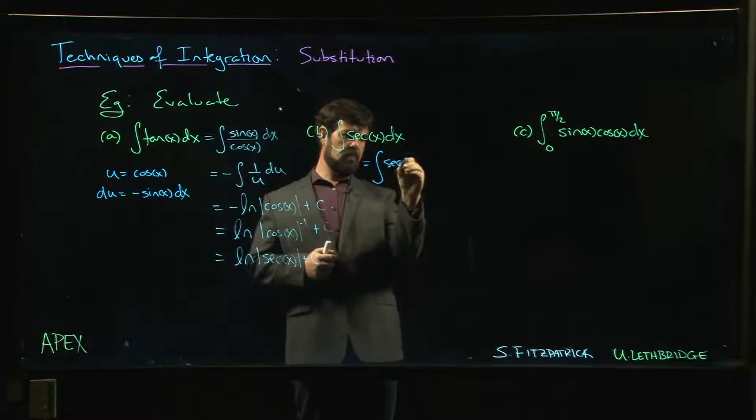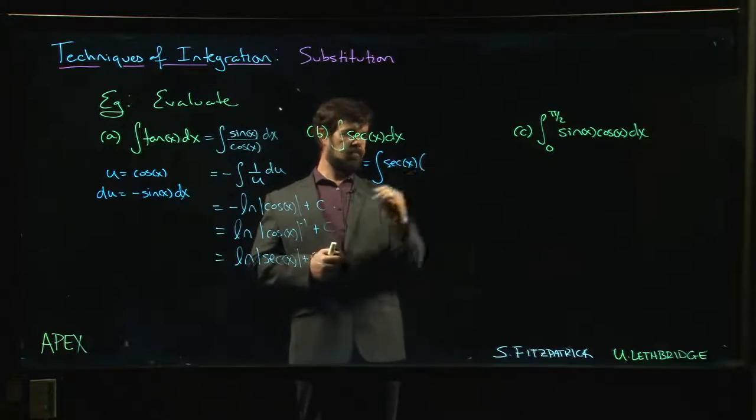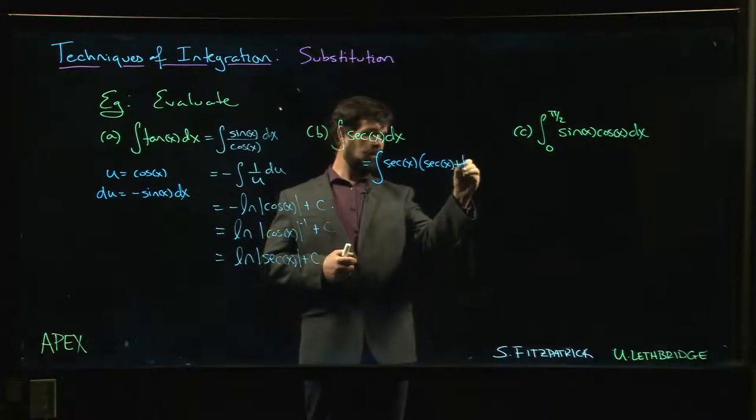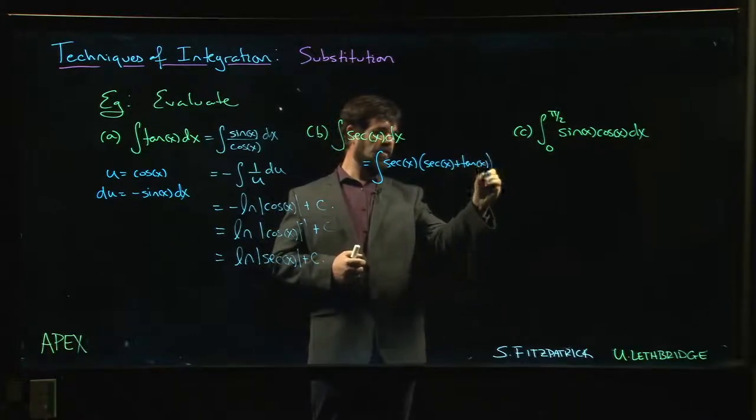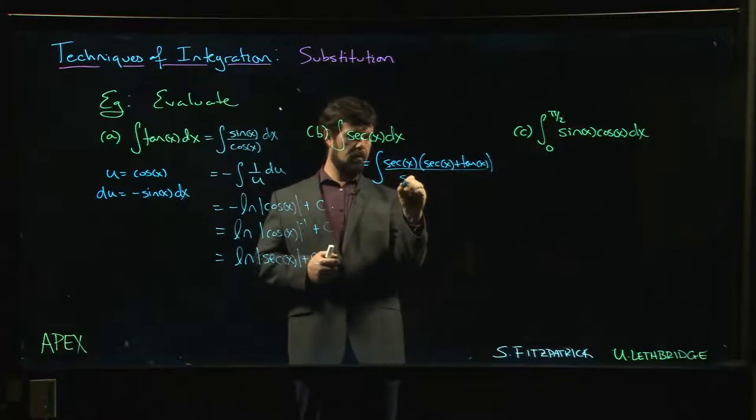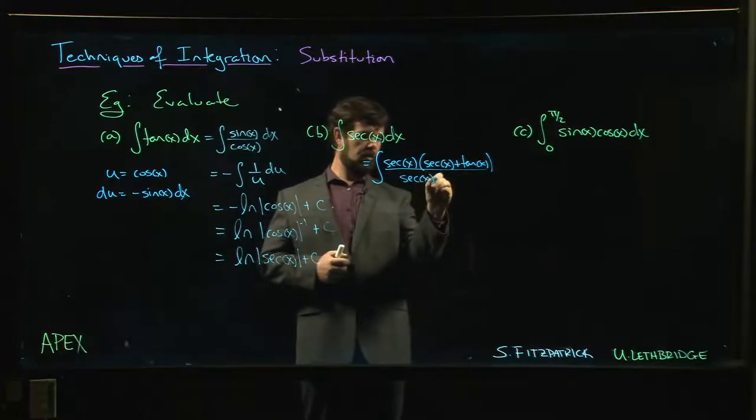You take secant and you multiply by secant x plus tan x. And well, we don't want to change anything, so if we multiply by that we should also divide by it.